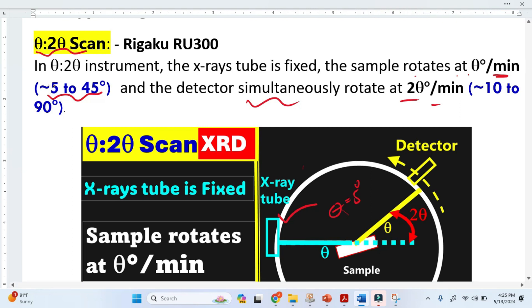When initially the sample was at 5 degrees, the detector was at 10 degrees. This theta is 10 degrees here. The maximum angle is up to 90 degrees.